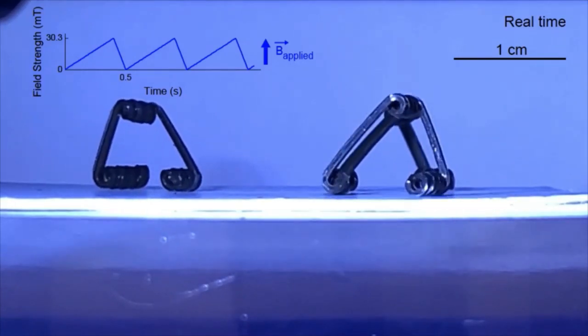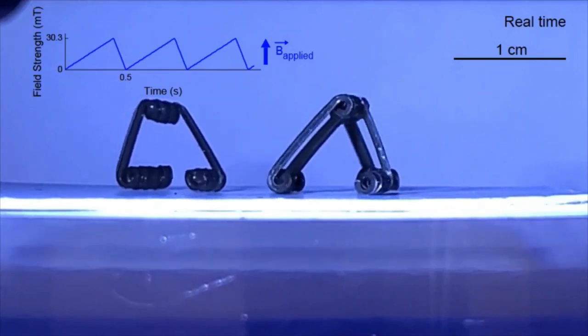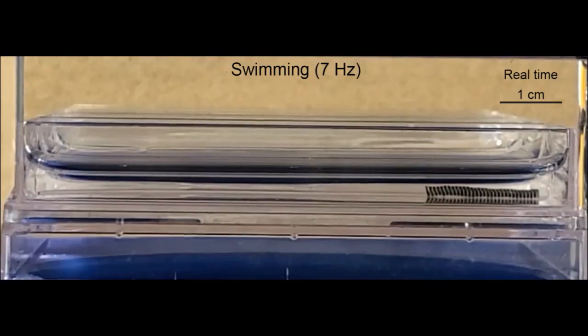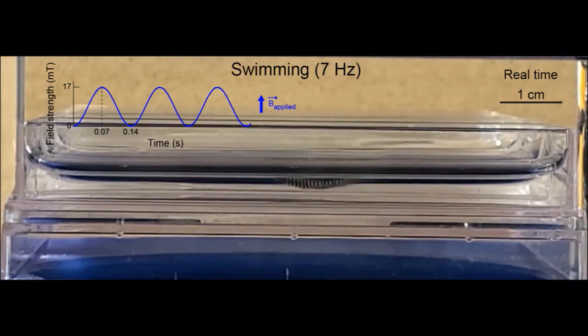Before they are magnetized, however, the flexible, lightweight bodies of the robots must be fabricated. The team starts this process with two kinds of rubber, each with a different stiffness. These are sandwiched together, then heated and stretched into a long, thin fiber.